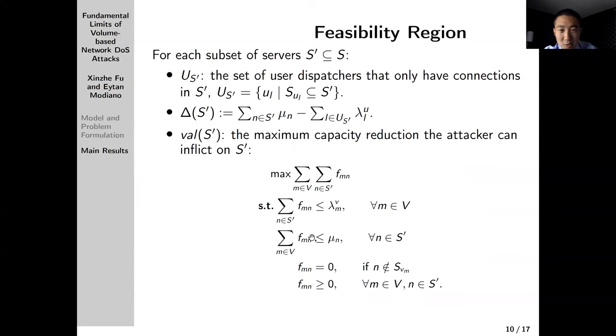To generally calculate val(S'), we can use this linear program. The optimal value of this linear program is equal to val(S'), and the optimal solution gives us a way to say how the adversary should allocate its resources to achieve this val(S'). The objective of this linear program is to maximize capacity reduction. The constraints are: the first constraint is on the adversary's resources because the injected traffic cannot be greater than the arrival traffic at adversary dispatchers. The second constraint says that the capacity reduction on each individual server in the set cannot be greater than the service capacity. The third is basically topology constraints, and the fourth is a nonnegativity constraint.